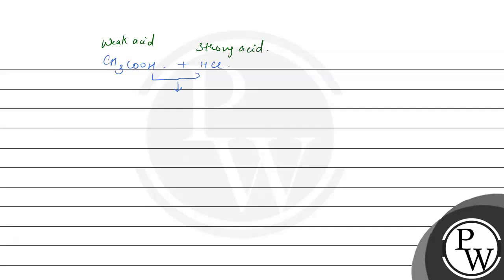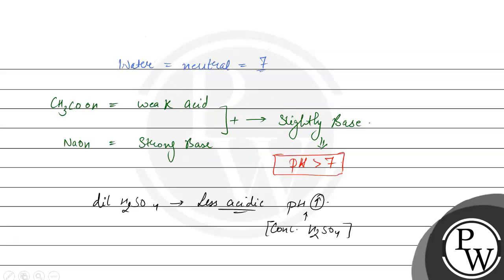So when we mix weak and strong acids, the solution will be slightly acidic. pH will be less than 7. So our D option will be correct.